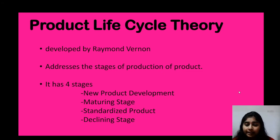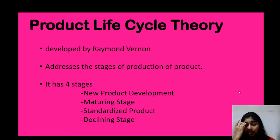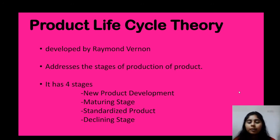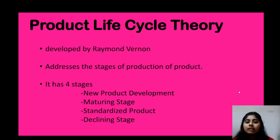Product life cycle theory describes four stages: first, a product is introduced to the market; second, it grows and matures; third, it gets stagnated and doesn't grow anymore; and finally, demand for the product declines and the product exits the market. These are the four stages of product life cycle theory, developed by Raymond Vernon.